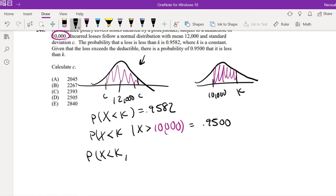X is less than K and X is greater than $10,000, divided by the probability that X is greater than $10,000. Okay.